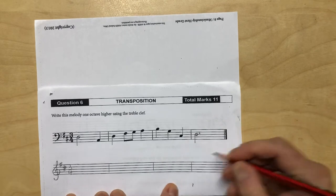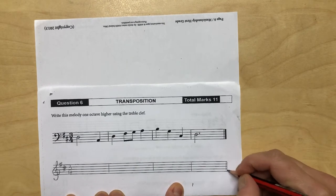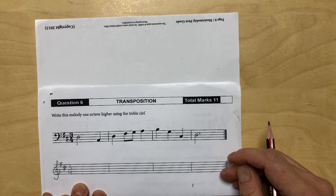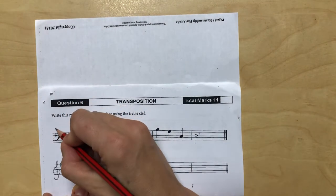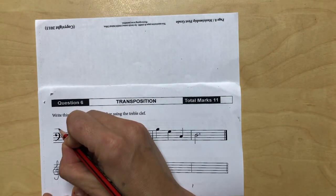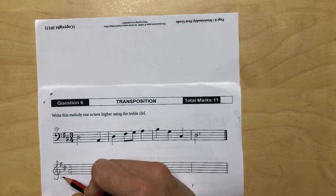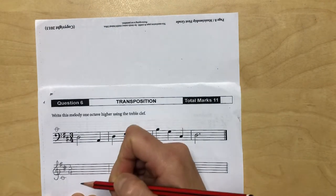Then the most important thing to find out is where is middle C. We're going to work out everything from middle C. Middle C is here in the bass but here in the treble clef.